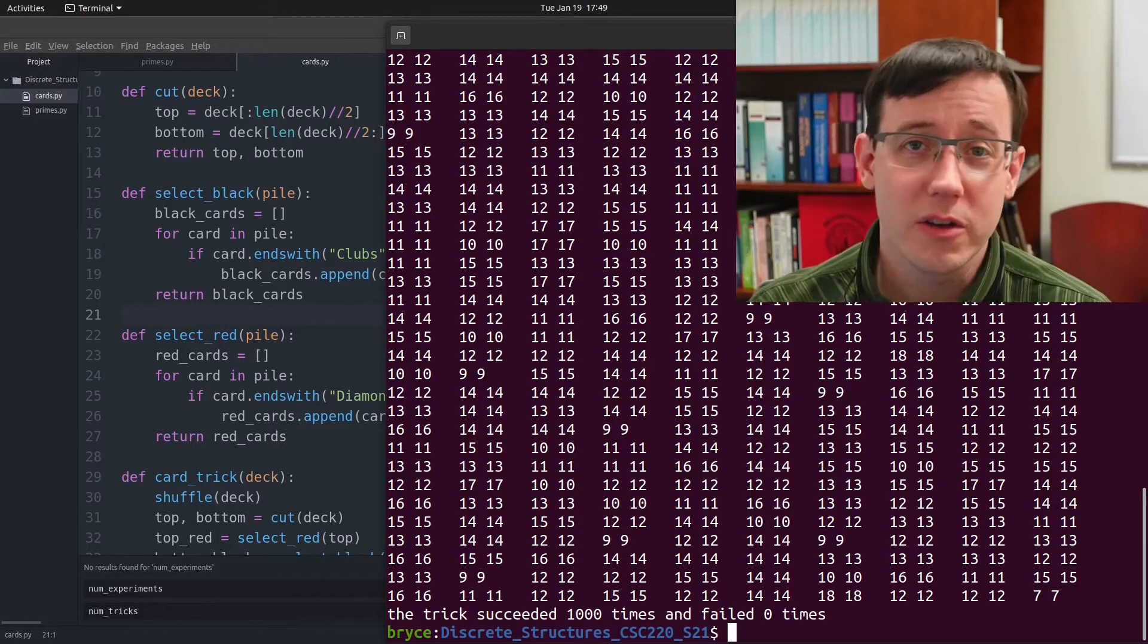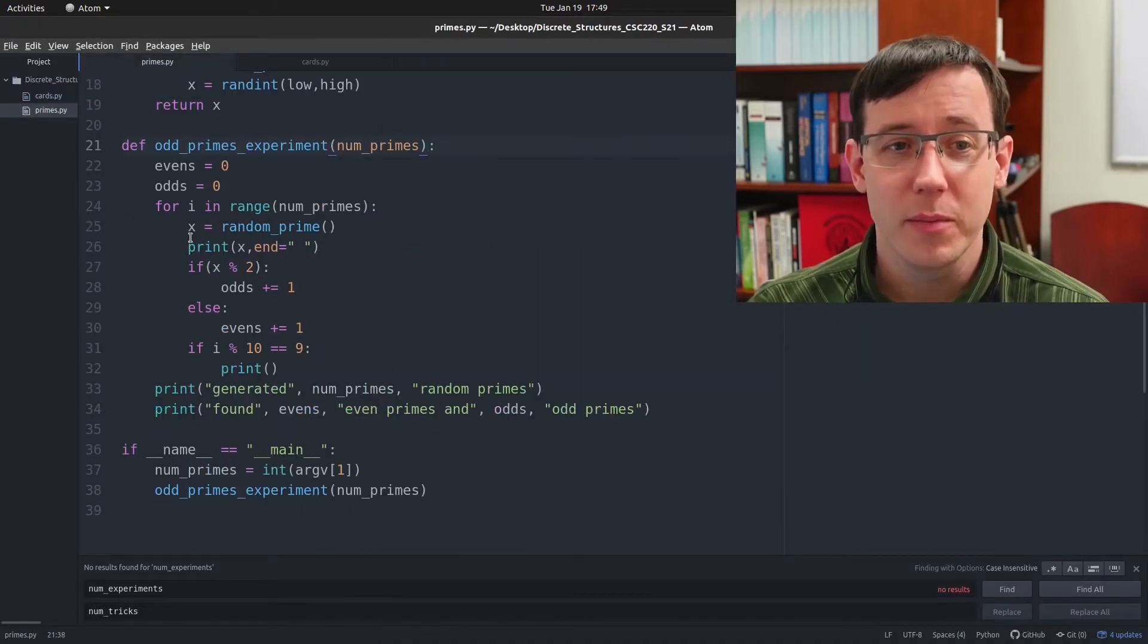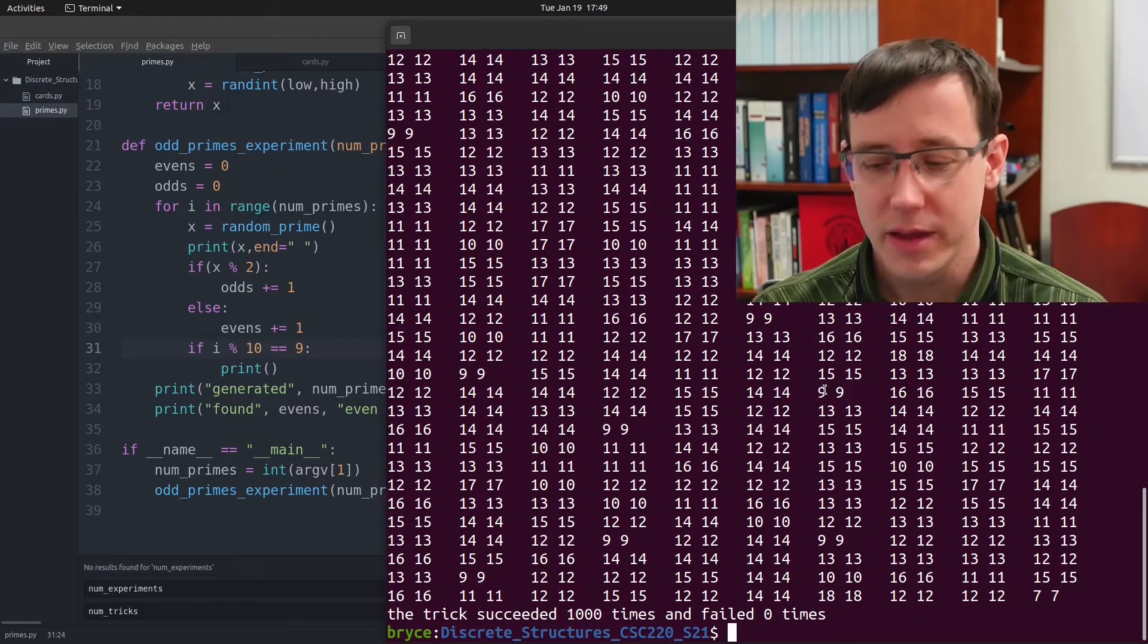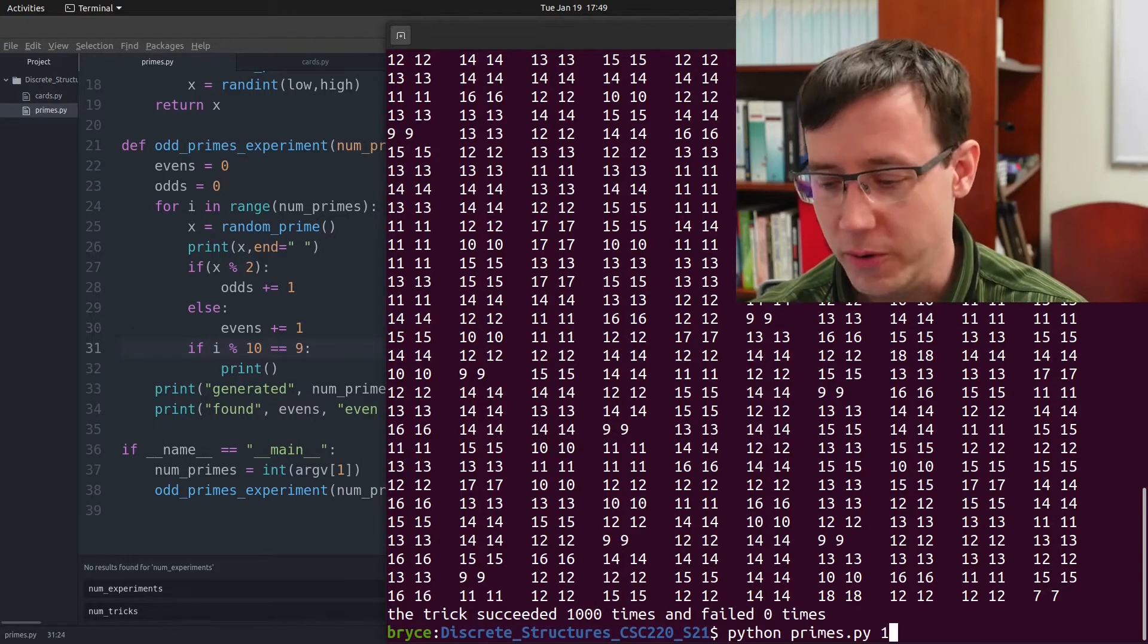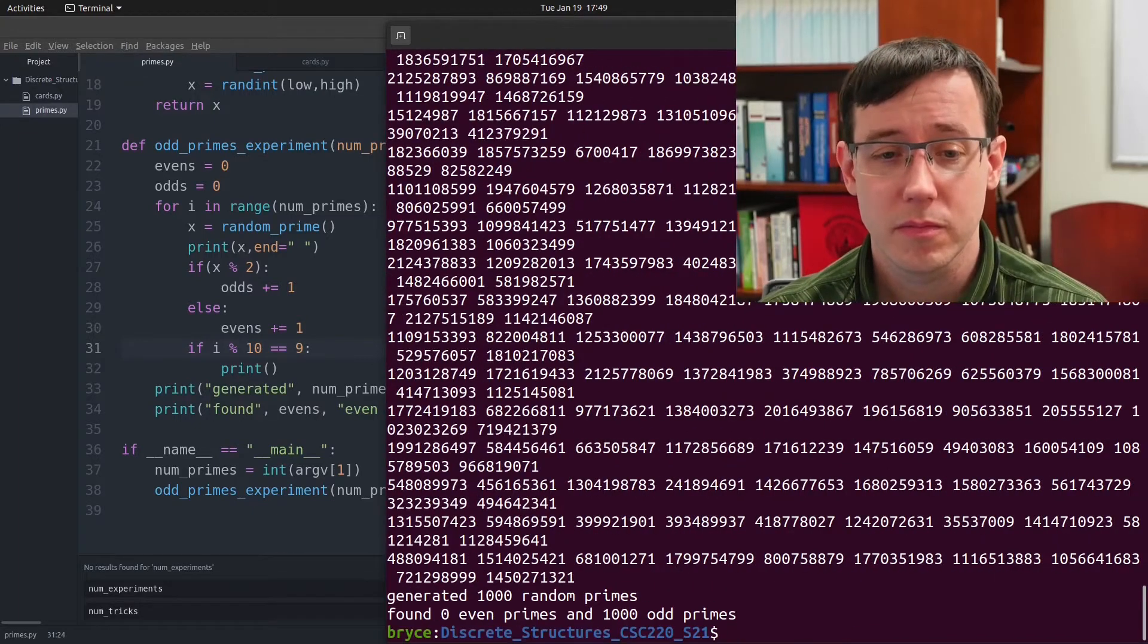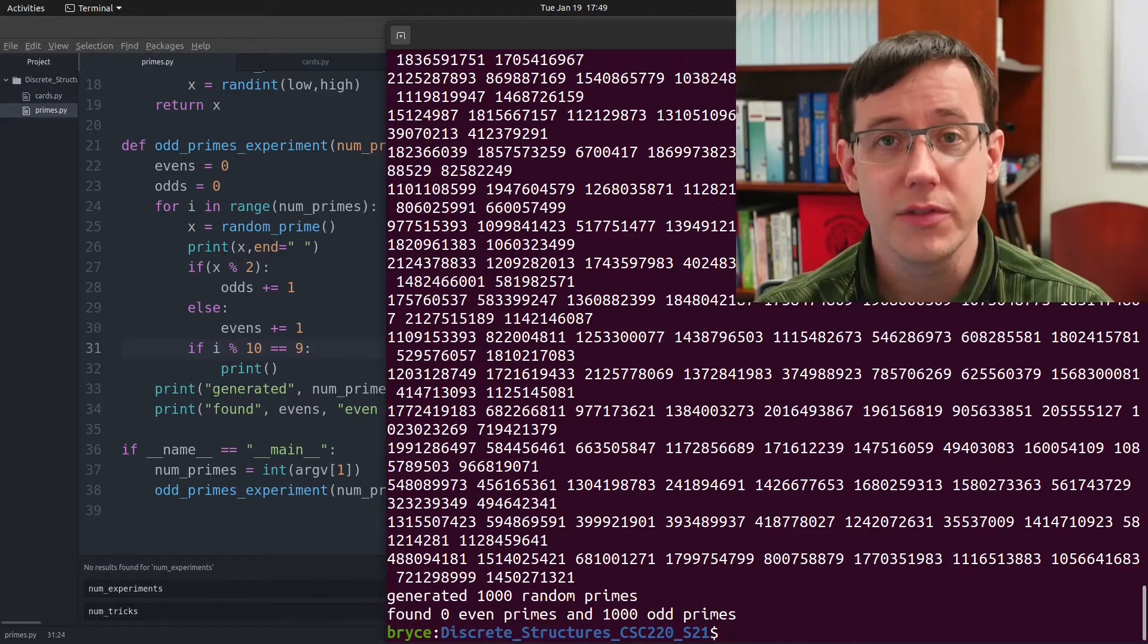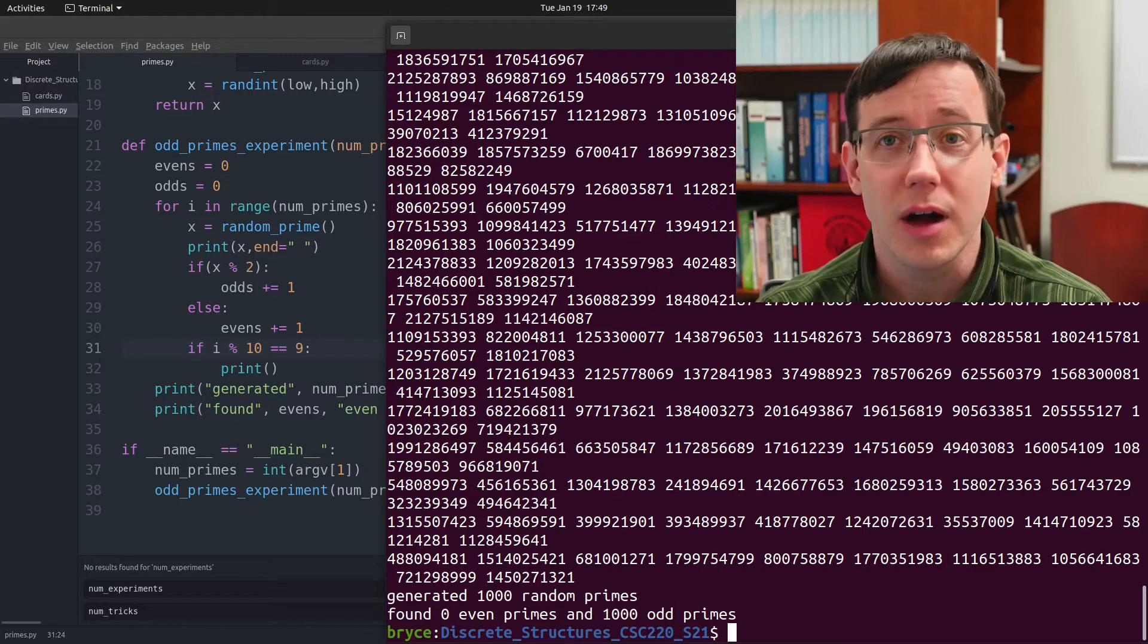To consider another example, I've also written a program that generates a random prime and checks whether that random prime number is even. And if I run that program for 1,000 experiments, we generated 1,000 random prime numbers, and all of them were odd. But does that demonstrate that all prime numbers are odd?